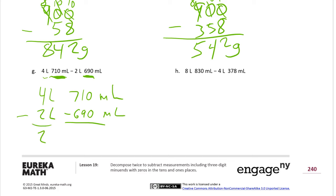You may just look at this and say 710 minus 690 is 20 — it's pretty easy to do mentally. You'll have 2 liters left. That's an example of how sometimes mental math is way easier and faster than the subtraction algorithm.